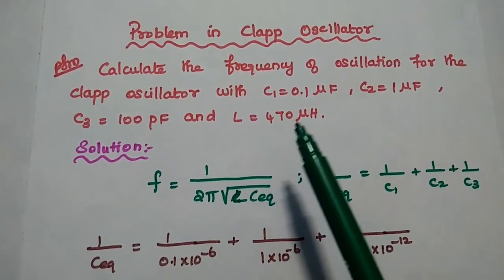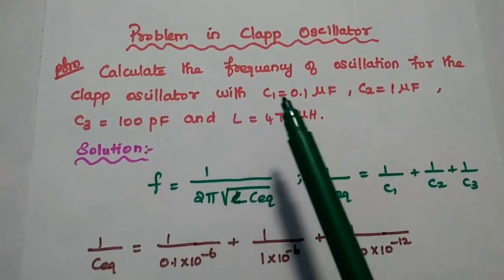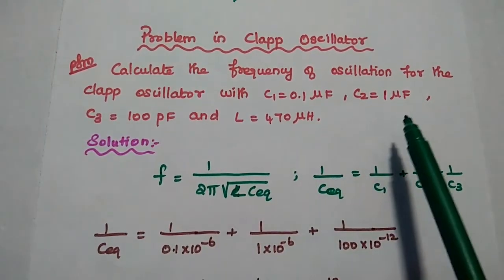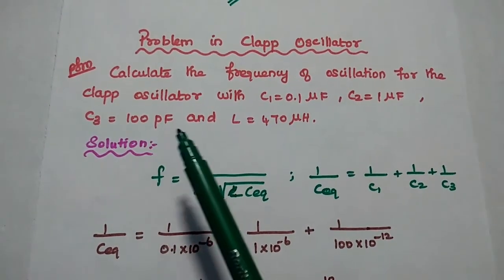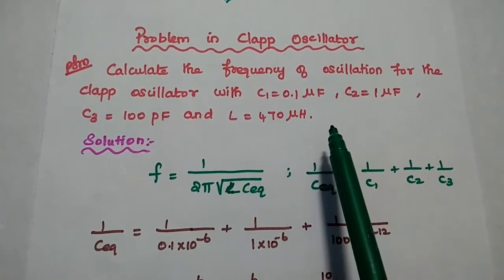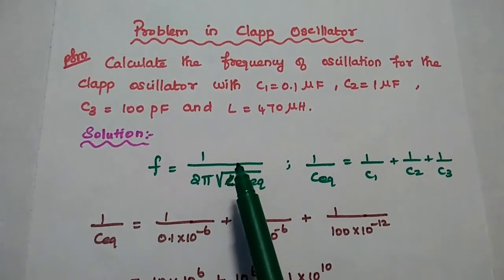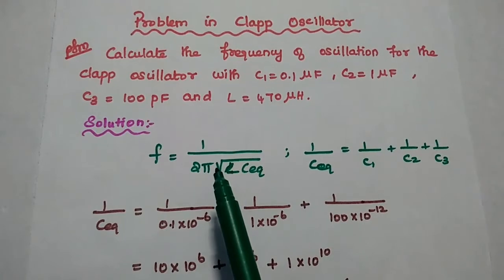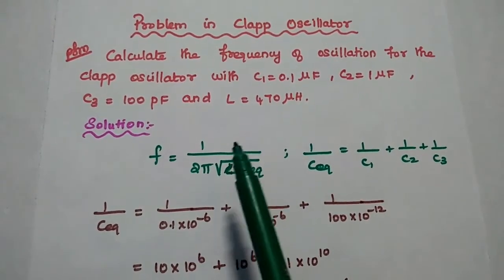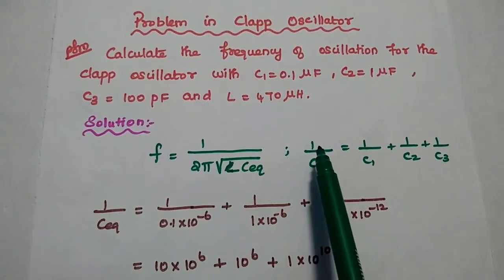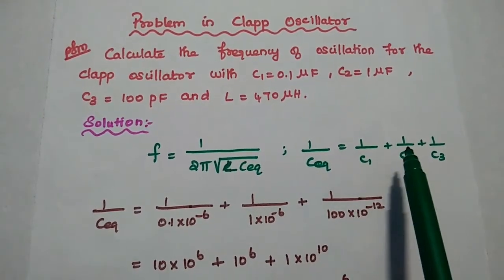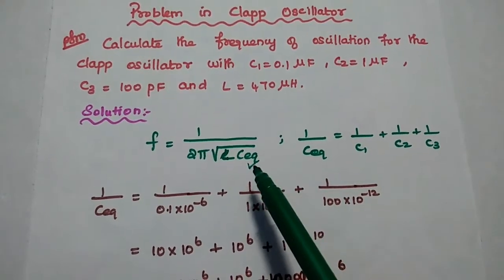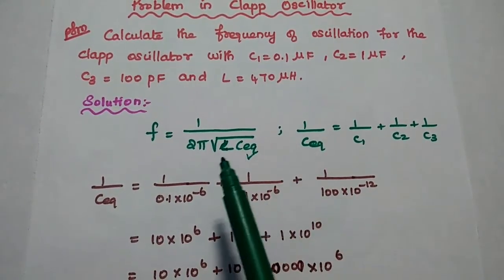Next, we are going to solve the problem in Clapp oscillator. Calculate the frequency of oscillation for the Clapp oscillator with C1 = 0.1 microfarad, C2 = 1 microfarad, C3 = 100 picofarad, and L = 470 microhenry. The formula for the frequency of oscillation is F = 1 / (2π √(L × C_equivalent)), where 1/C_equivalent = 1/C1 + 1/C2 + 1/C3. First we find the equivalent capacitance.